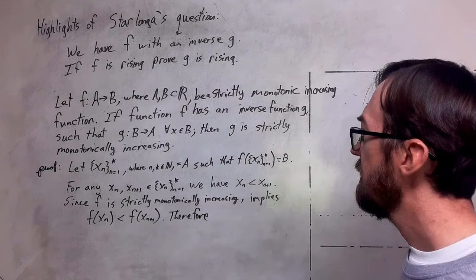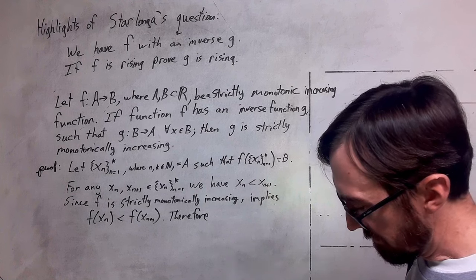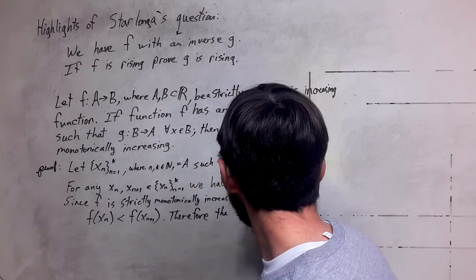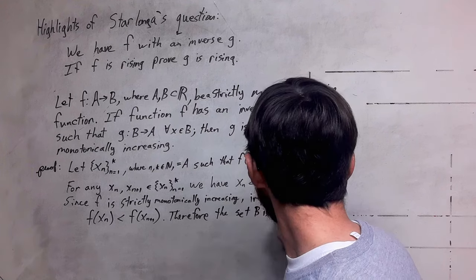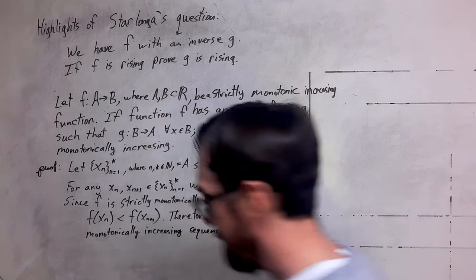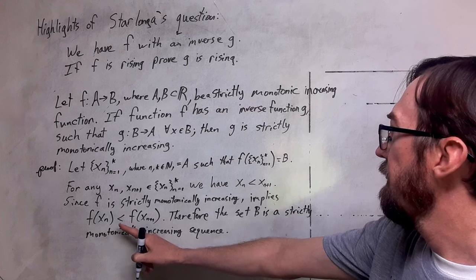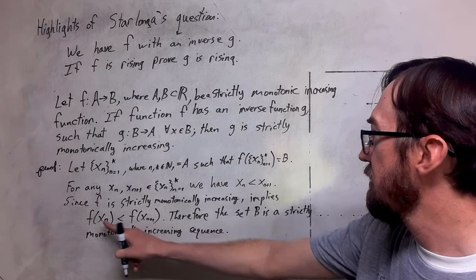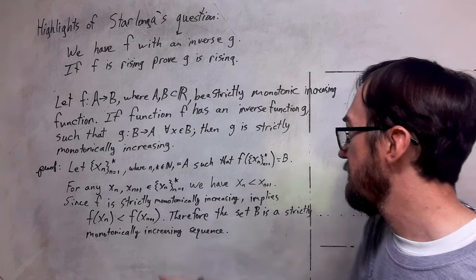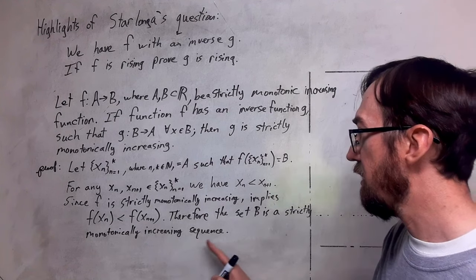All right. This inequality is showing that the images of a, which are the elements of b, have this ordering to them, and it's a strict inequality. So the set b has to be strictly monotonically increasing also as a sequence.